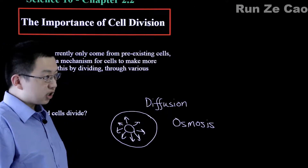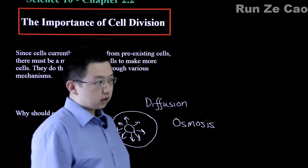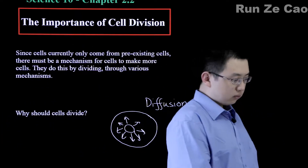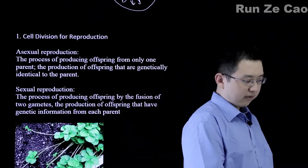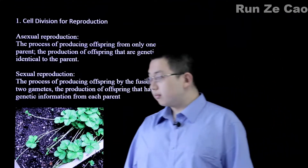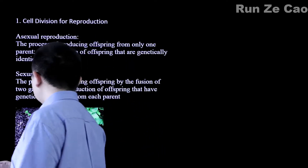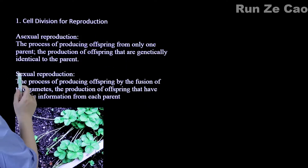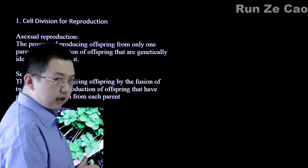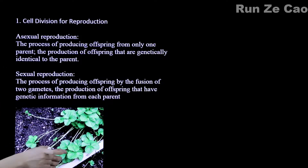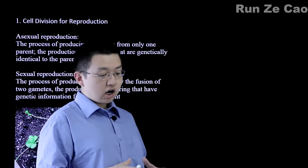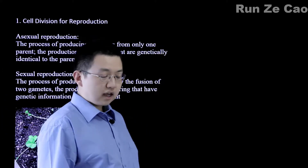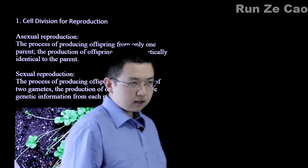Clearly the cell does its best to stay alive and reproduce. To reproduce, it divides, and also to stay alive, it divides. For reproduction, it can be asexual reproduction — just making two daughter cells that are exactly the same, at least in theory. When you're copying your DNA, you will make some mistakes, and therefore there will be some mutations.